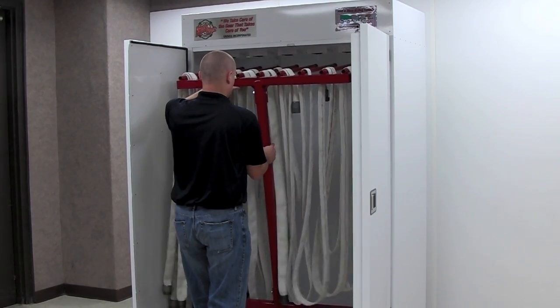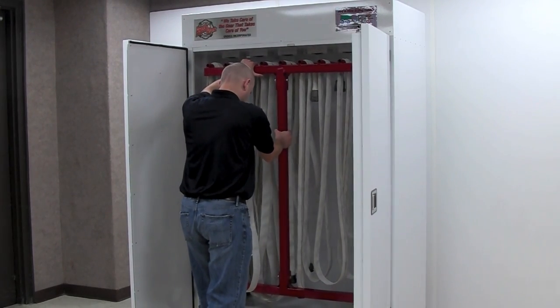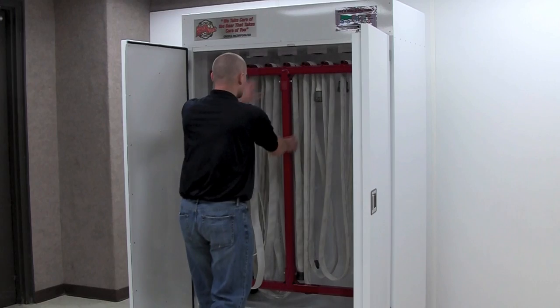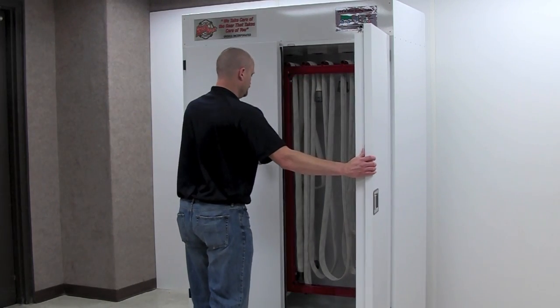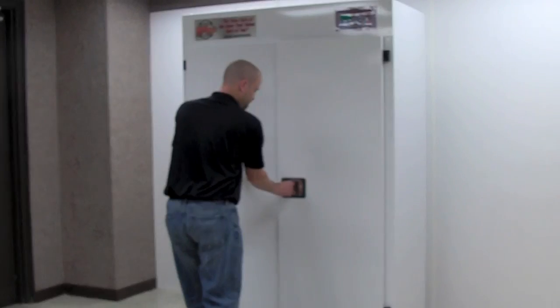Begin by tilting the rack back towards you. Push the rack into the dryer, making sure that all casters clear the doorways. Start by shutting the left door first, and then while holding the latch open, shut the right, locking the doors.